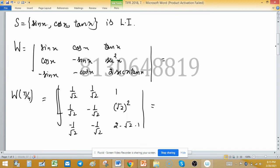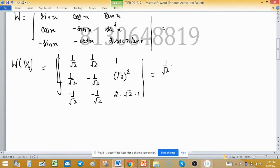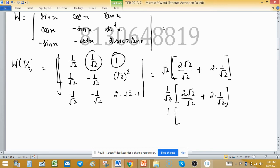Expanding the determinant: 1 upon root 2 times (2 root 2 divided by root 2 plus 2 times 1 upon root 2), minus 1 upon root 2 (second entry), and the third entry gives minus 2 plus 1 upon 2.